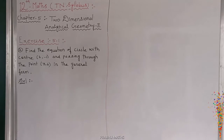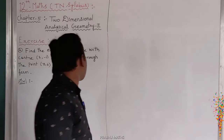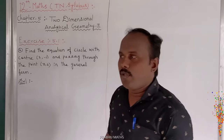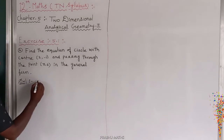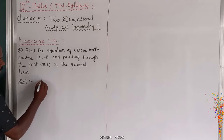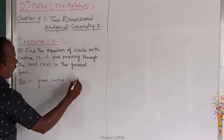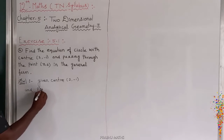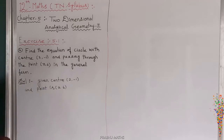Find the equation of the circle with center (2, -1) passing through the point (3, 6) in the general form of the circle. So first of all, the given values are: center is (2, -1) and the point is (3, 6).